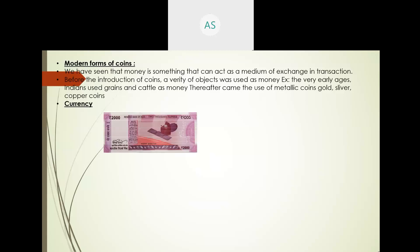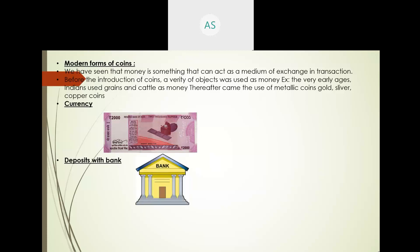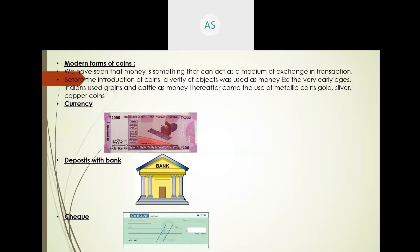In modern forms of money, we have divided into three parts: one is currency, second one is deposits with the bank — whatever money you deposit in the bank and use for transactions — and the third one is the check. Let's look at each one by one.